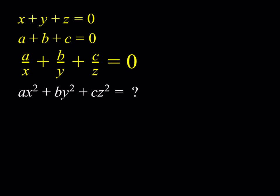So we are given that x plus y plus z is equal to zero, a plus b plus c is equal to zero, and a over x plus b over y plus c over z is equal to zero. And we're supposed to evaluate ax squared plus by squared plus cz squared.